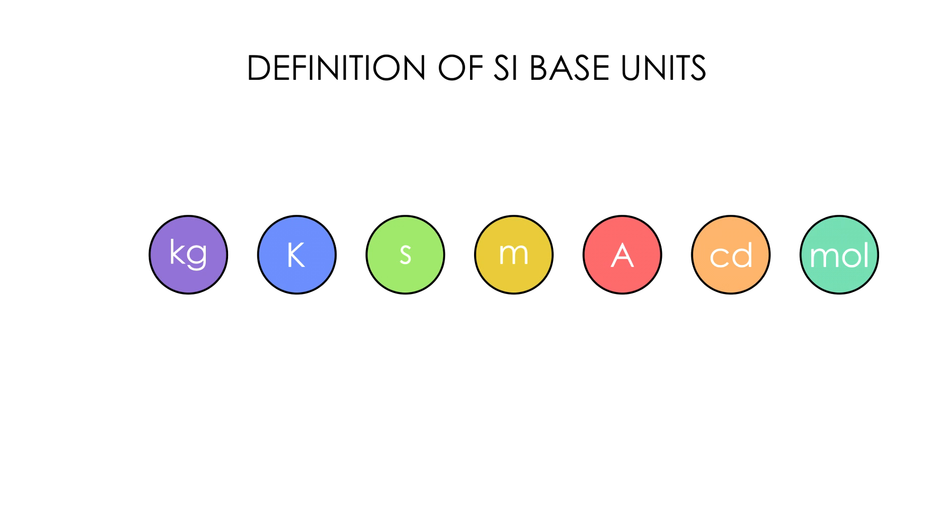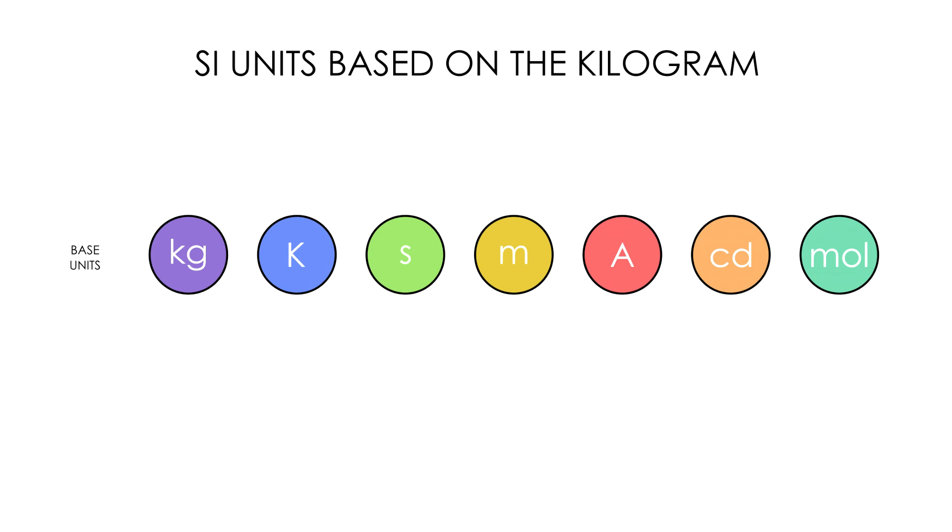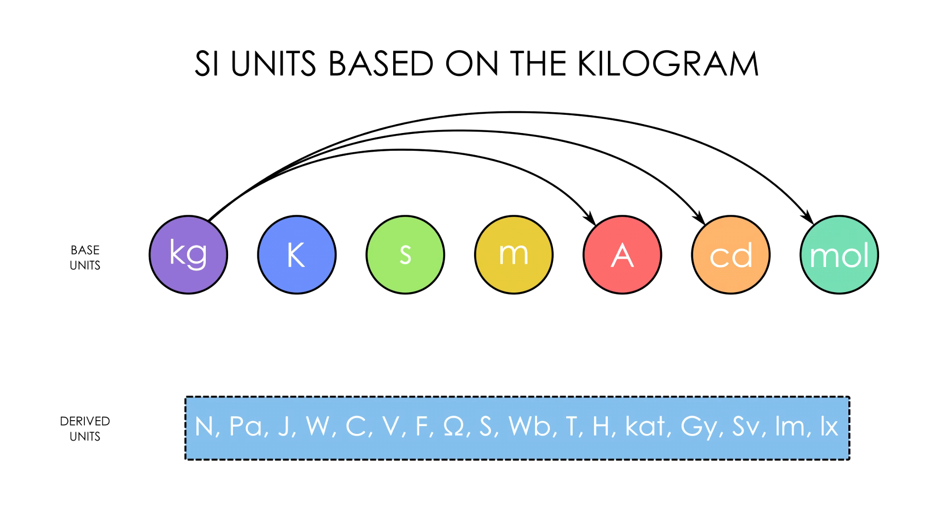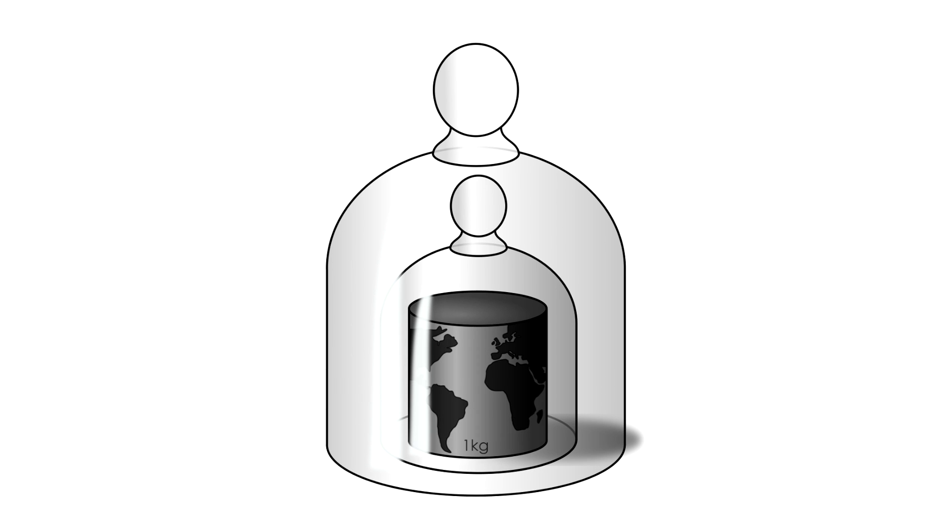The kilogram is the only SI base unit currently defined by an artifact instead of a fundamental physical constant. But the kilo is a part of the definition of 20 other units, including 3 other base units. It shows up in the amp, the watt, the newton, the joule, the candela, the ohm, the lumen, the lux, and mole, not to mention any of the imperial units which are officially defined based on their metric equivalents. In other words, basically the entire world system of measurements can be traced back to this single object in a vault in France.